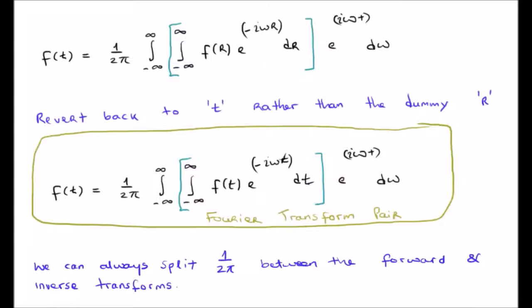Because the equations are Fourier transform pairs, we are always able to move the 1 over 2π term anywhere, or place any ratio that gives the same overall product. So we could split the 1 over 2π between the forward and inverse transforms, or just tag it onto one of them. This is the reason you'll often see different versions of the Fourier transform — they are all equivalent, just differing in where the 1 over 2π appears.